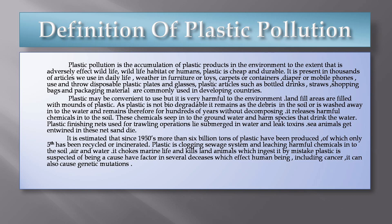Plastic fishing nets — fishing nets also made of plastic — are used for trawling operations, meaning catching fish with nets. Those nets are submerged, meaning they are underwater, and those nets leak toxins because they are made of plastic. Sea animals become attached or entwined in the fishing nets, and this affects and may even kill sea animals.